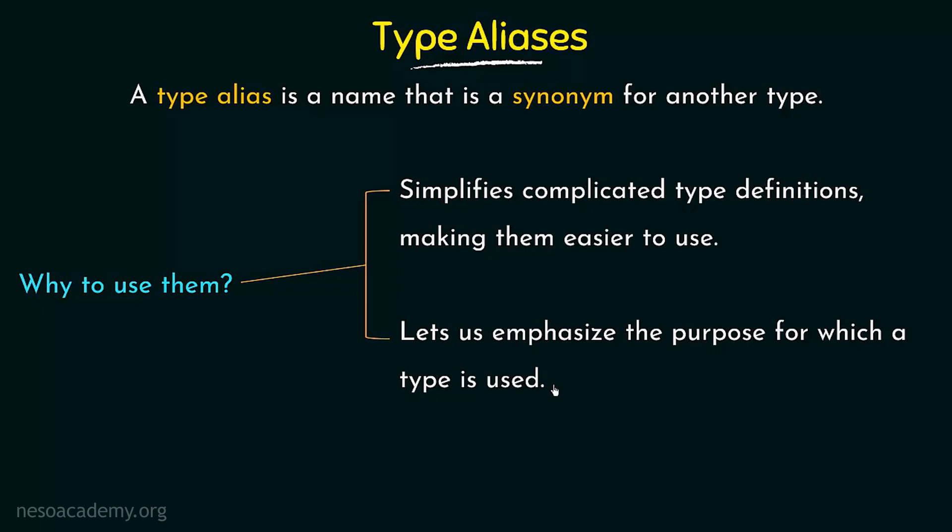The second reason is it lets us emphasize the purpose for which a type is used. For example, let's say that you are using a float data type, and from the name float, not everybody may understand what this type actually means. You could give it a different name which emphasizes the meaning of that type and tells us the purpose for which the type is being used.